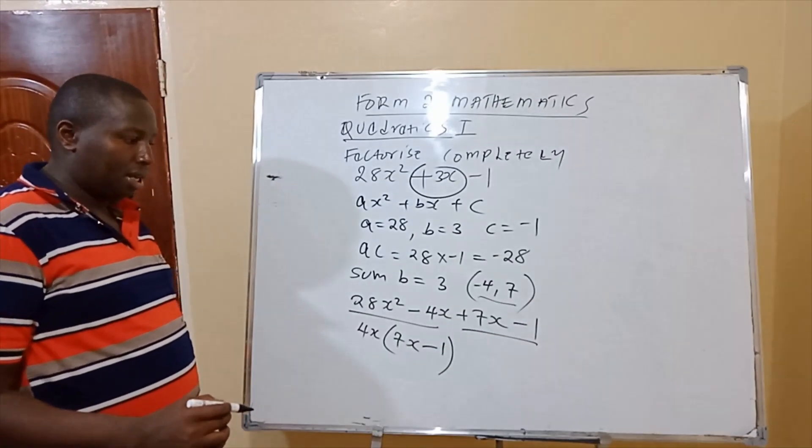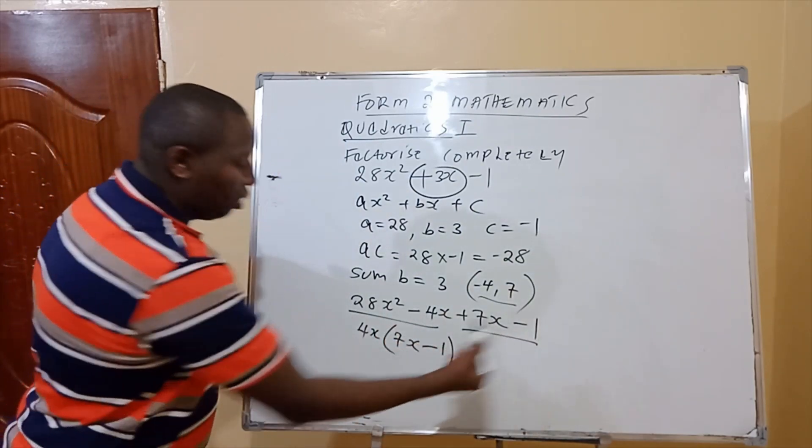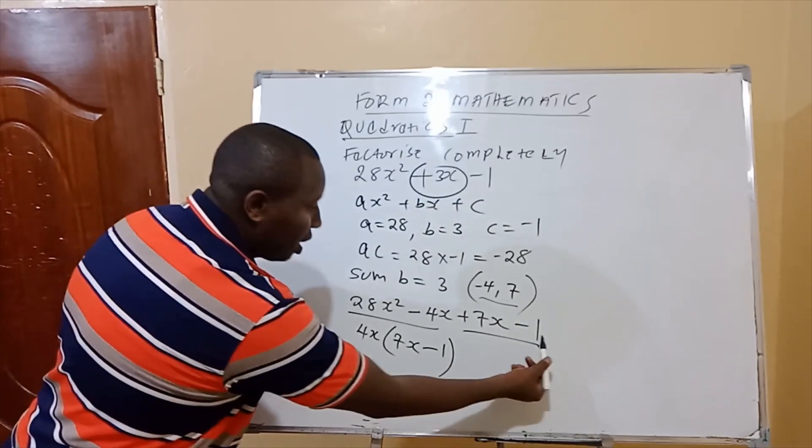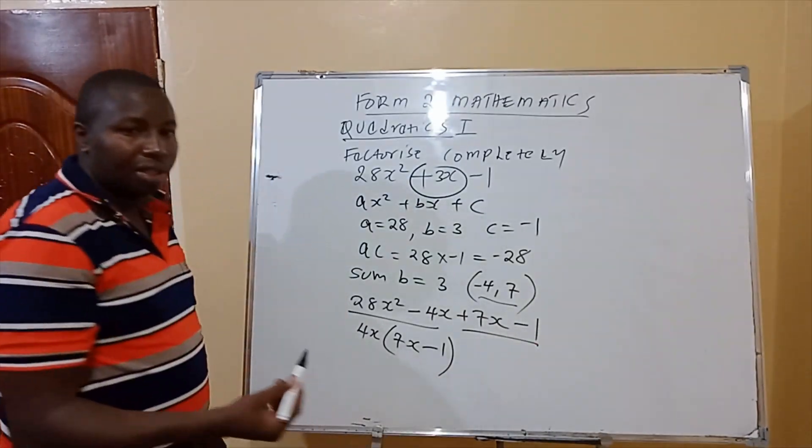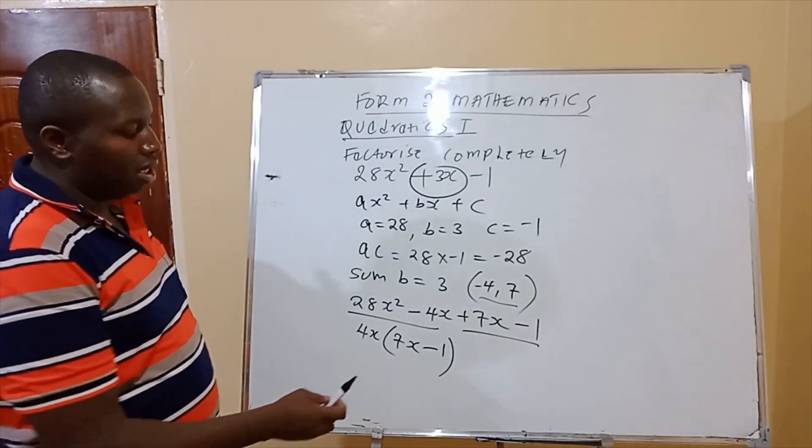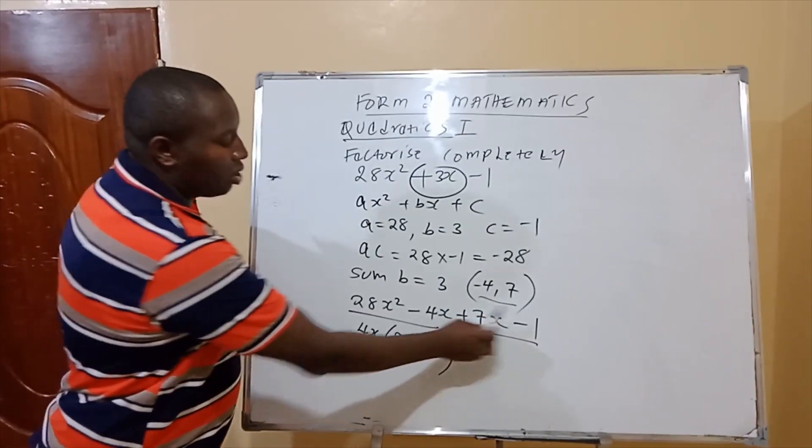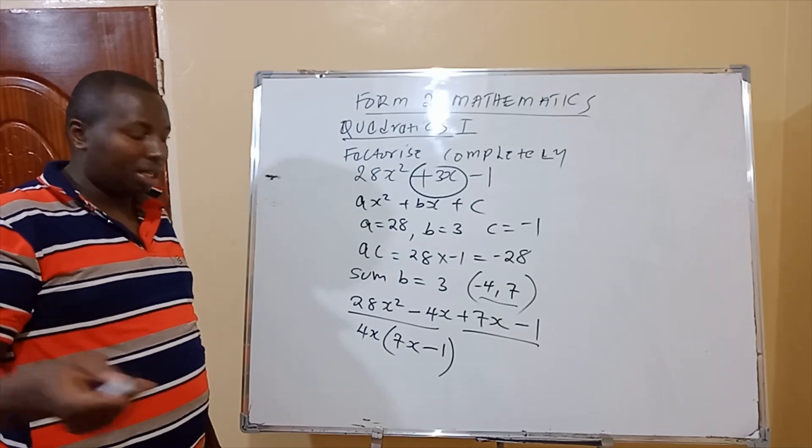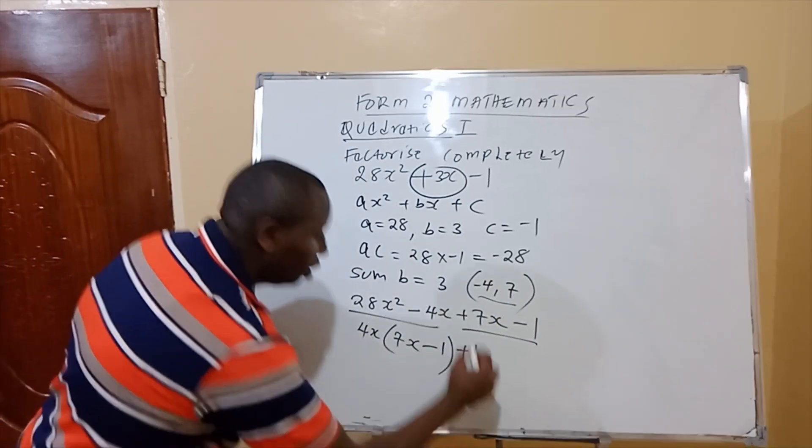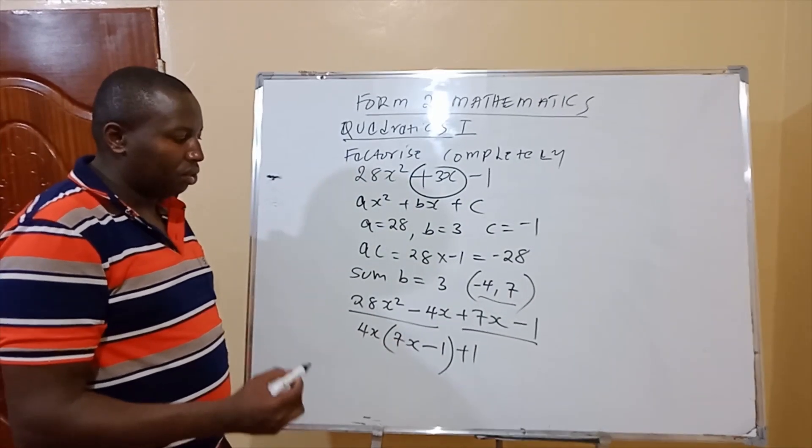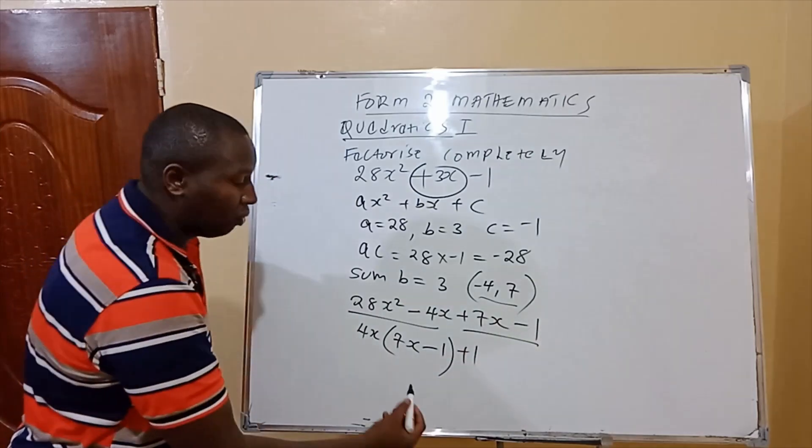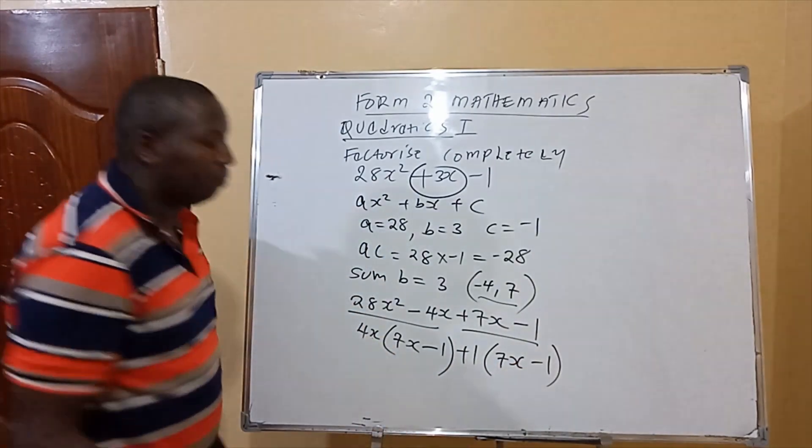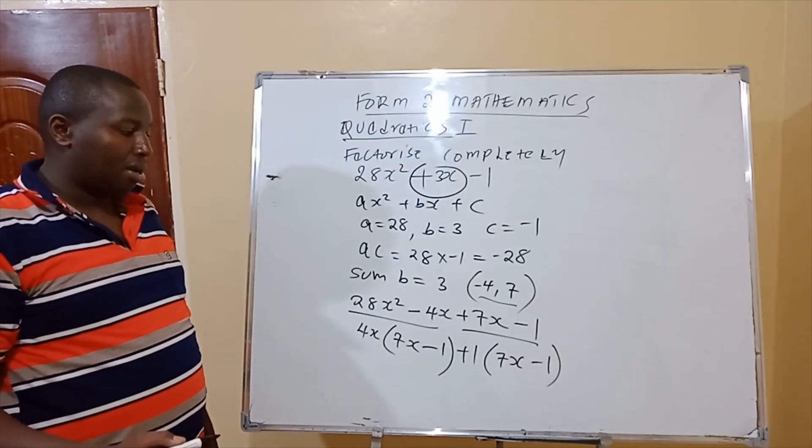Then, the next one, you go to the next part. You have factorized the first part. The last part is 7x minus 1. In this case, 1 is a common factor in all numbers. So therefore, you say plus 1. You don't just leave it. So, 1 is a common factor for this. So, you put your bracket, 7x minus 1.